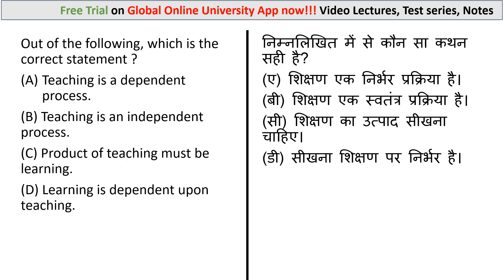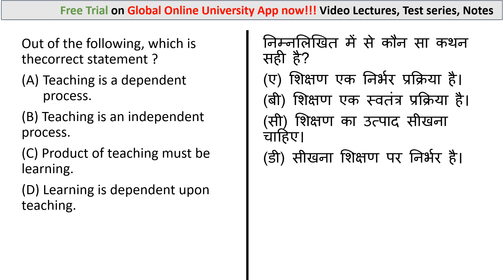Next question: out of the following, which is the correct statement? The options are: (a) teaching is a dependent process, (b) teaching is an independent process, (c) the product of teaching must be learning, and (d) learning is dependent upon teaching. Students are the dependent variable in the teaching process — dependent on the teacher, required to act according to the teacher's planning and organization. The correct answer is option A: teaching is a dependent process.